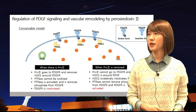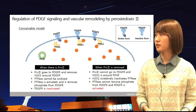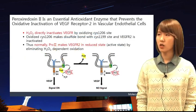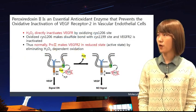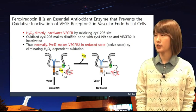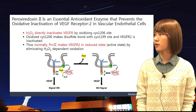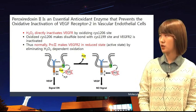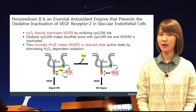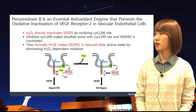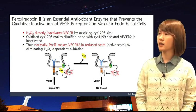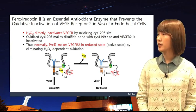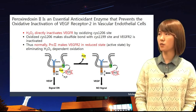If we remove PRX2, exactly the opposite things happen — PDGFR is activated. We saw PDGFR regulation worked via PTPA oxidation. Now we will look at the other mechanism. PRX2 acts in opposite ways in PDGFR and VEGFR. In VEGFR, H2O2 directly inhibits VEGFR by oxidizing its active sites. No PTPA is involved here. Thus, we can say that PRX2 is protecting VEGFR from oxidation.